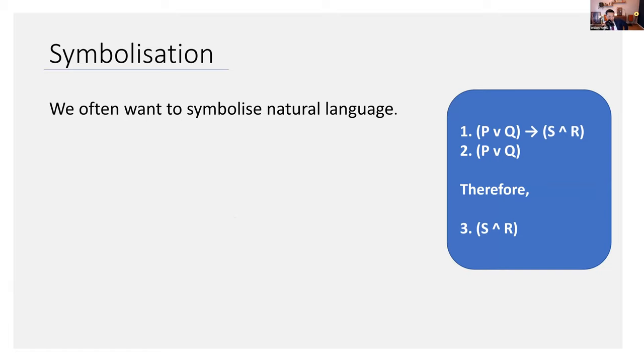It turns out that often we want to symbolize natural language. What do I mean by natural language? I mean things like English, Chinese. We get a bunch of prose. What we want to do is turn it into symbols, like P, Q, and so on. Why would we want to do that?